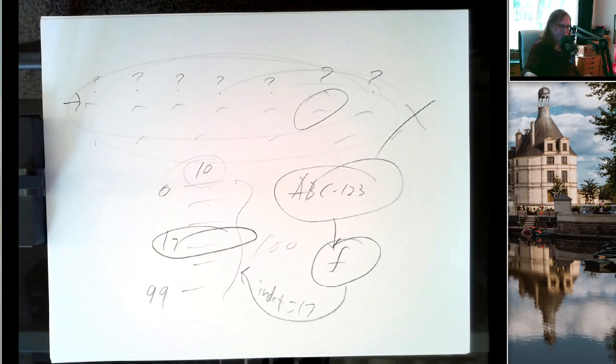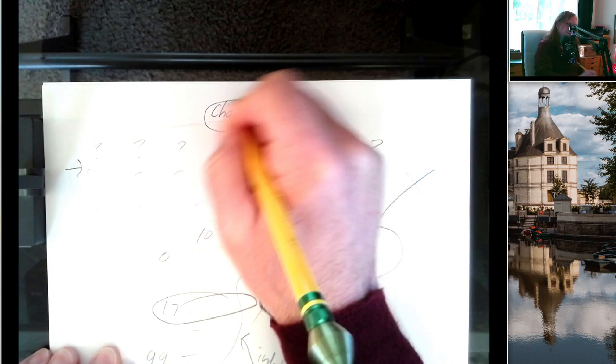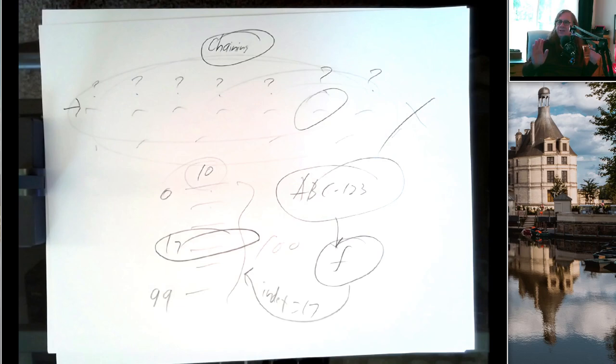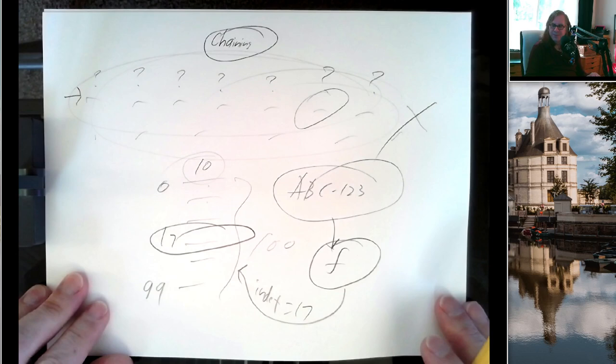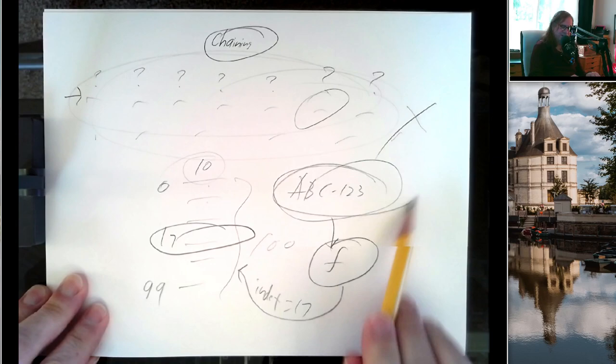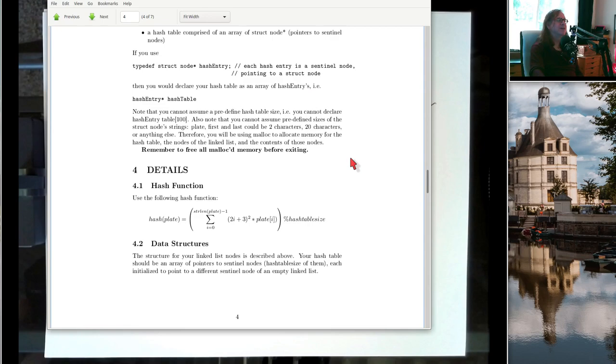This uses the technique of chaining instead of probing. Probing is another way to deal with collisions. In PA2, we're just dealing with chaining, so we have an array of linked lists. Let's look at this hash function — how do we take something like a license plate and turn it into an index?